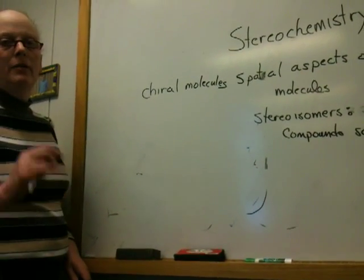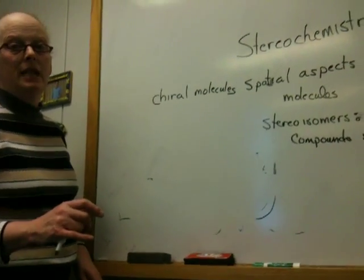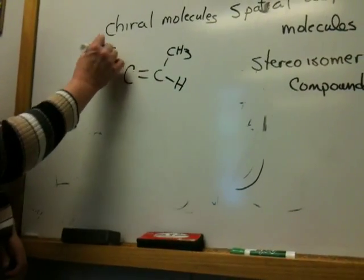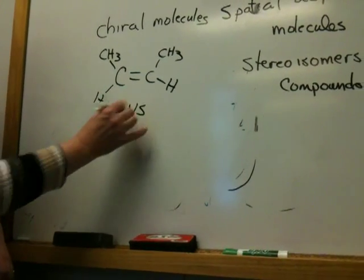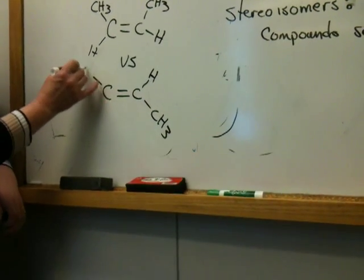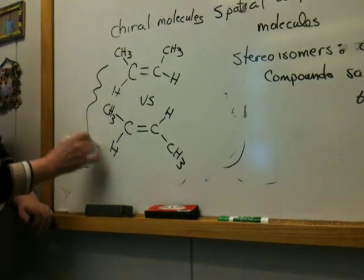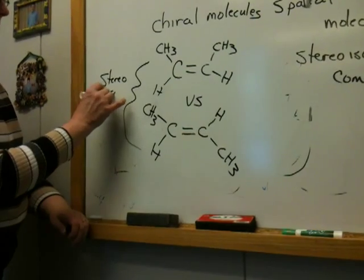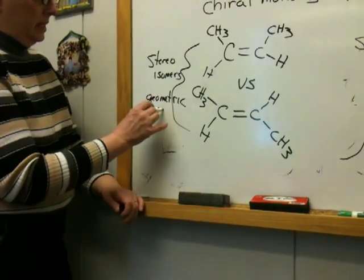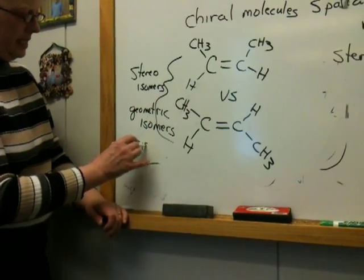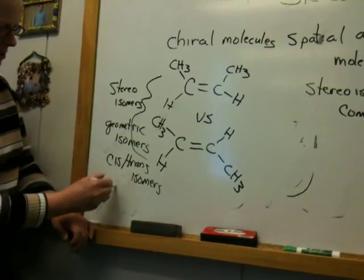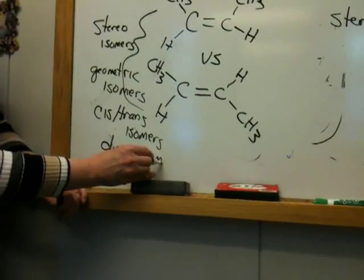You have learned a little bit of stereochemistry if you learned anything about double bonds having cis and trans isomers. For example, if I had this molecule versus this molecule — these molecules are stereoisomers. Specifically, they are geometric isomers, or the so-called cis-trans isomers. They can also be called diastereomers, as you'll see later.